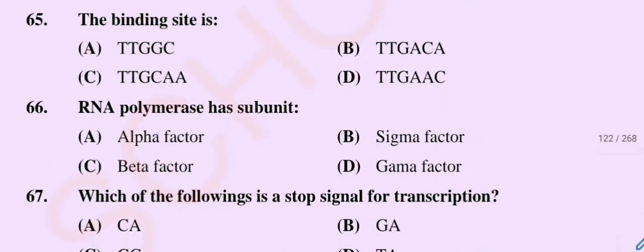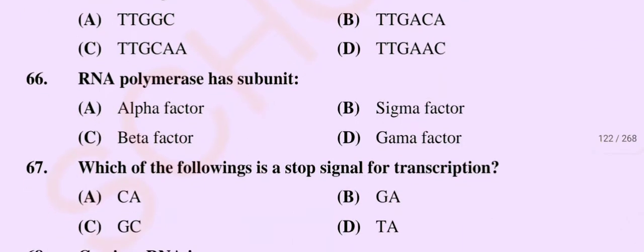Question number 66: RNA polymerase has subunit — Option A: alpha factor, Option B: sigma factor, Option C: beta factor, Option D: gamma factor. So the correct option is Option B, sigma factor.